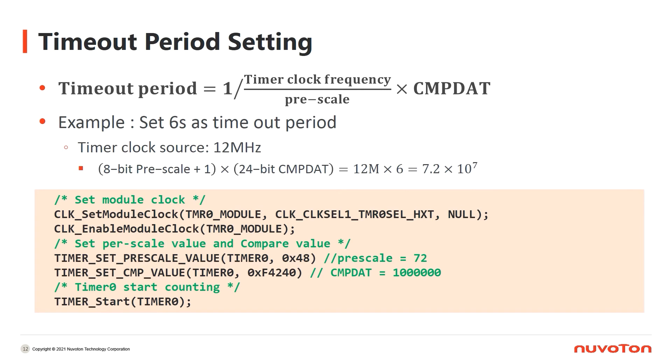After getting the values, you can set registers of the timer as below. The example codes here are the settings of timer 0. The first line is to set up the clock source of timer 0. Here, we use HXT, High Speed External Clock, as the clock source. The second line is to enable the clock of timer 0. Then, the following two lines are to set registers. Set Prescale and Comparator by the values we got from the formula, which are 72 for Prescale and 1 million for Comparator. At last, we call timer start function to start the counting of timer 0.